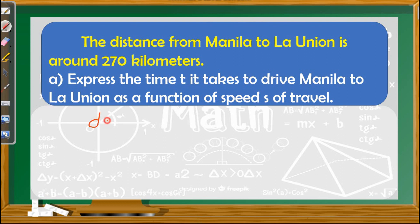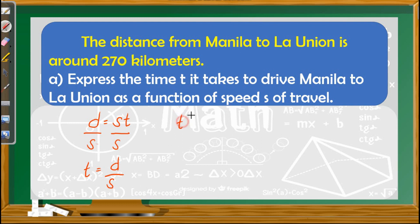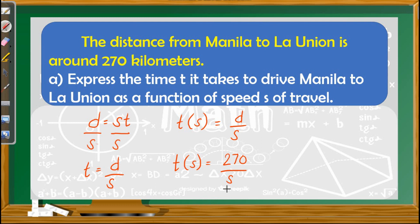Let us recall the relationship of these three. The distance is equivalent to the product of the speed and the time. Since we are looking for the time as a function of speed, we divide both sides by s so that we have the value for t: t equals d over s. Since we are asked to write the function with respect to speed, and d is 270 kilometers (a fixed value), we have t(s) = 270/s.